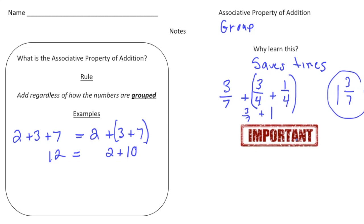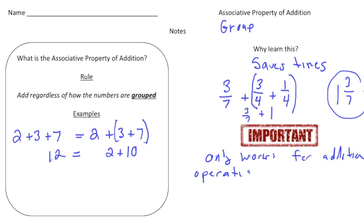Really important: the associative property of addition only works for addition operations. If you have any other type of operation in there, it does not work. Here's an example that would not work: if we have eight take away four plus seven — because we have the subtraction sign here, we can't use the associative property of addition.